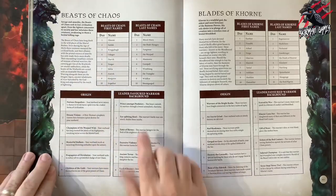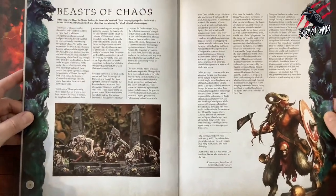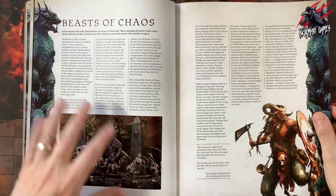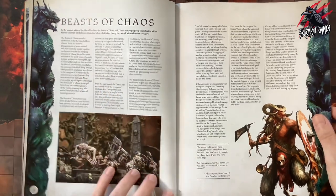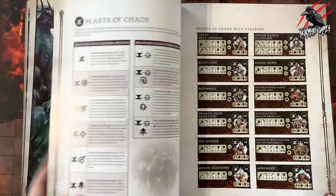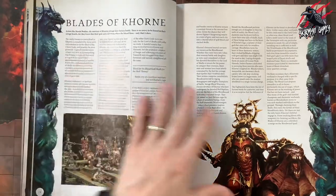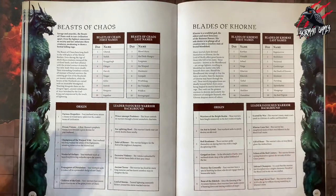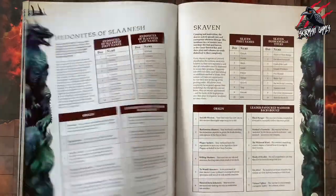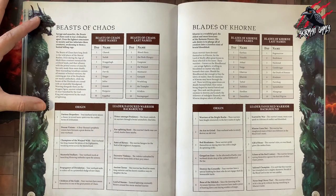Before going through this section I took a look back at the introduction to the Beasts of Chaos. For every warband you're going to get two pages of narrative, and this is a good place to get a little flavour of what they're all about. It gives you some background and explains some of the reasons why they might be in the eight points and what they're up to, so it's really important to read through that first.